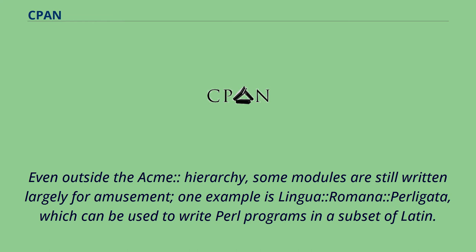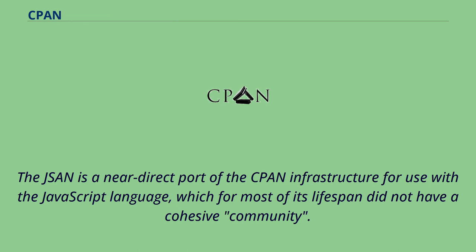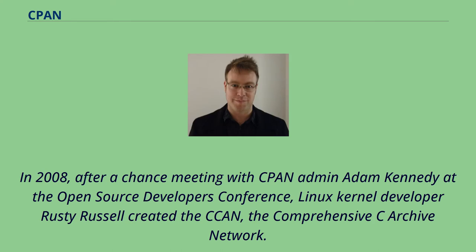In 2005, a group of Perl developers who also had an interest in JavaScript got together to create JSAN, the JavaScript Archive Network. JSAN is a near-direct port of the CPAN infrastructure for use with the JavaScript language, which for most of its lifespan did not have a cohesive community. In 2008, after a chance meeting with CPAN admin Adam Kennedy at the Open Source Developers Conference, Linux kernel developer Rusty Russell created CCAN, the Comprehensive C Archive Network.